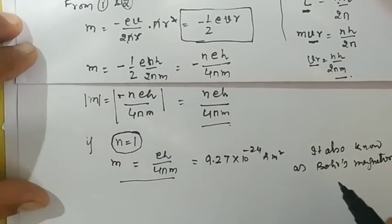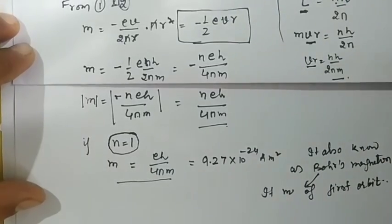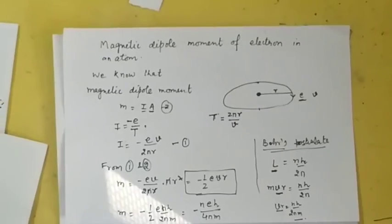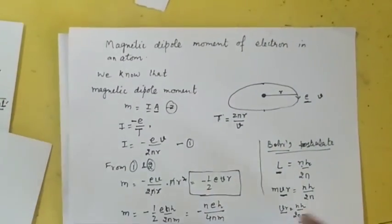Bohr's magneton is basically the magnetic dipole moment of an electron in the first orbit, n equals 1. To calculate the direction of magnetic dipole moment for this particular case, see here.